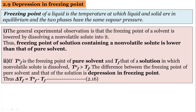Comparing boiling point elevation and depression in freezing point: in boiling point elevation, the boiling point of the solution containing non-volatile solute is more than that of pure solvent. Here, the freezing point of the solution containing non-volatile solute is less than the pure solvent. T⁰f is the freezing point of pure solvent — it is more than Tf. The difference is called depression in freezing point, denoted as ΔTf. Same as ΔTb for boiling point, ΔTf is the depression in freezing point. The equation is: ΔTf = T⁰f − Tf, where T⁰f is the higher temperature (pure solvent) and Tf is the freezing point of the solution.